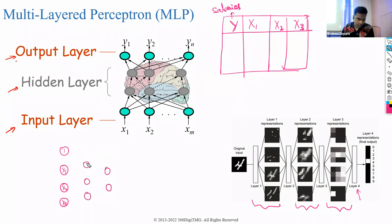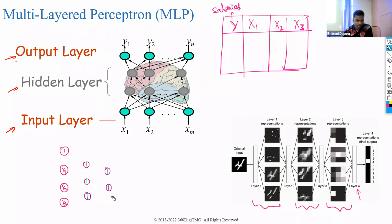Every neuron, except those in the input layer, has an integration component and an activation component, and has connections to every other neuron in the forward layer.